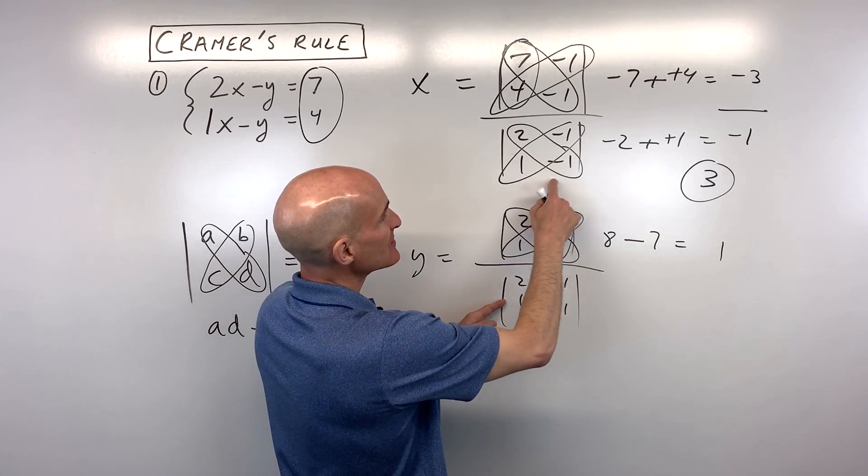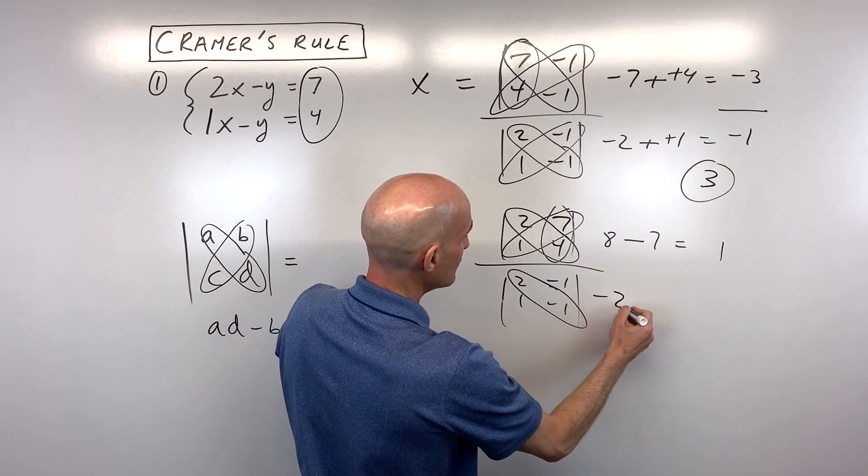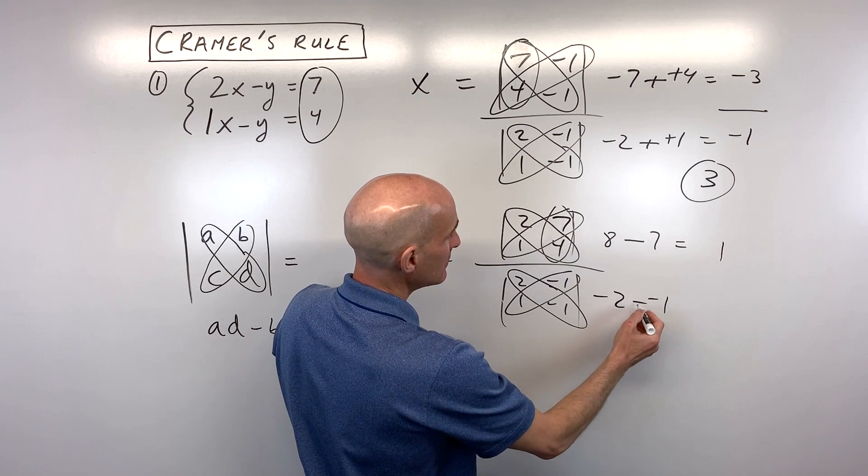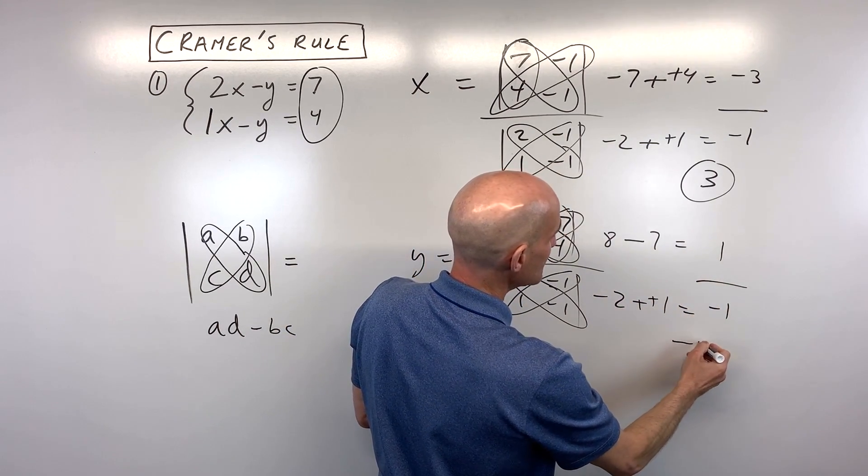And then the denominator is going to be the same as the denominator here. But let's just do it again for practice. That's going to be negative 2, minus negative 1, which is equal to negative 1. And 1 divided by negative 1 is negative 1.